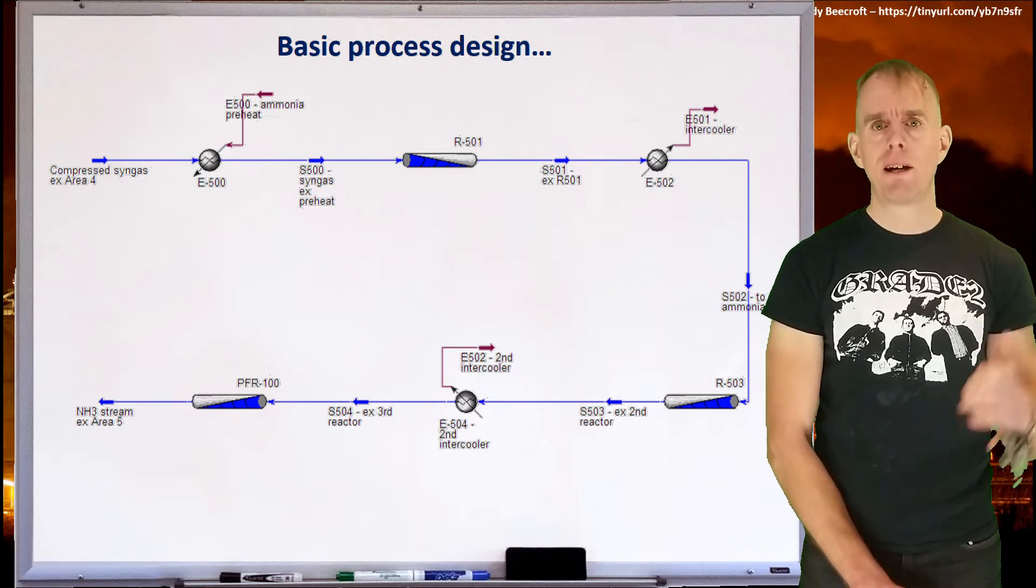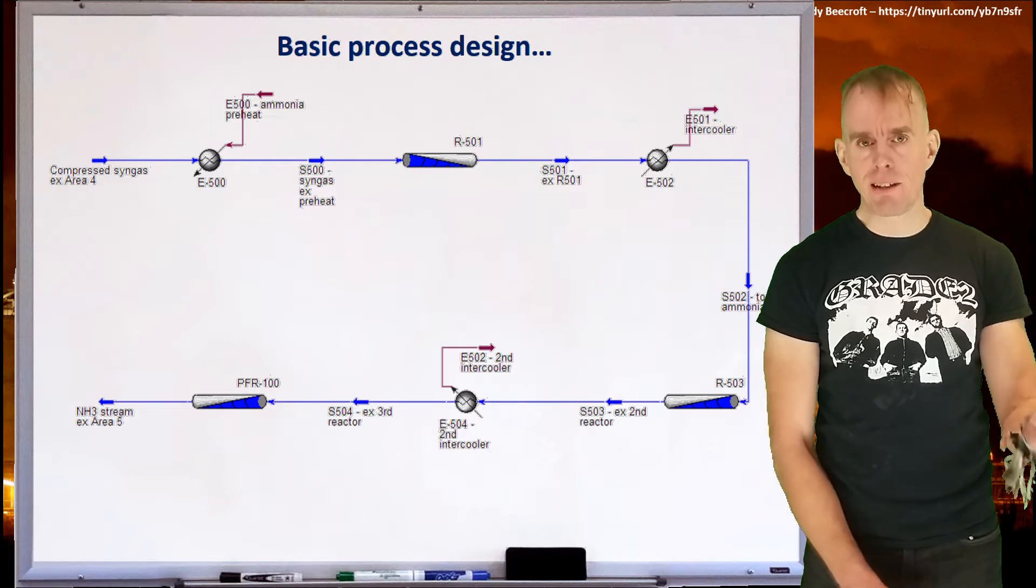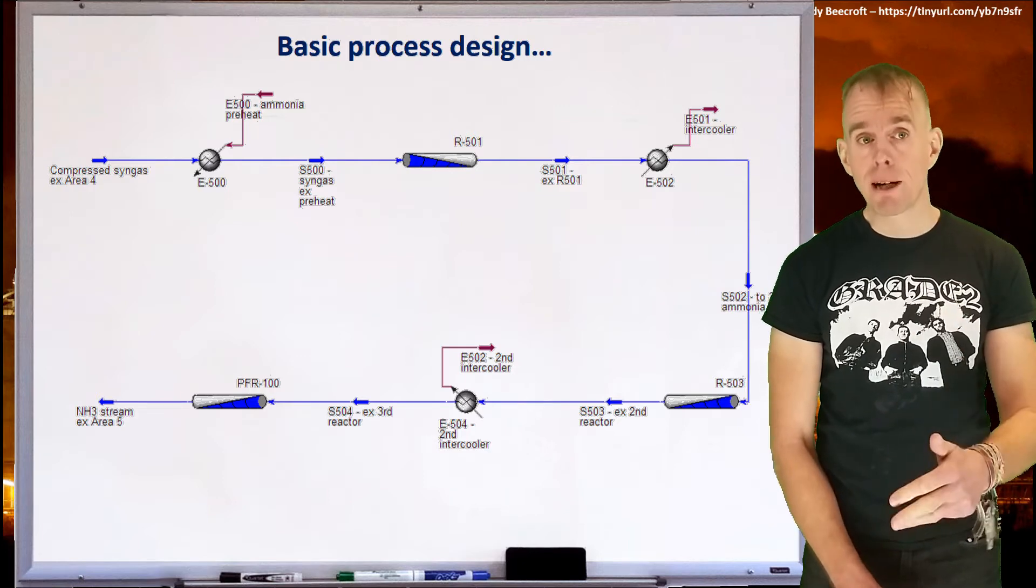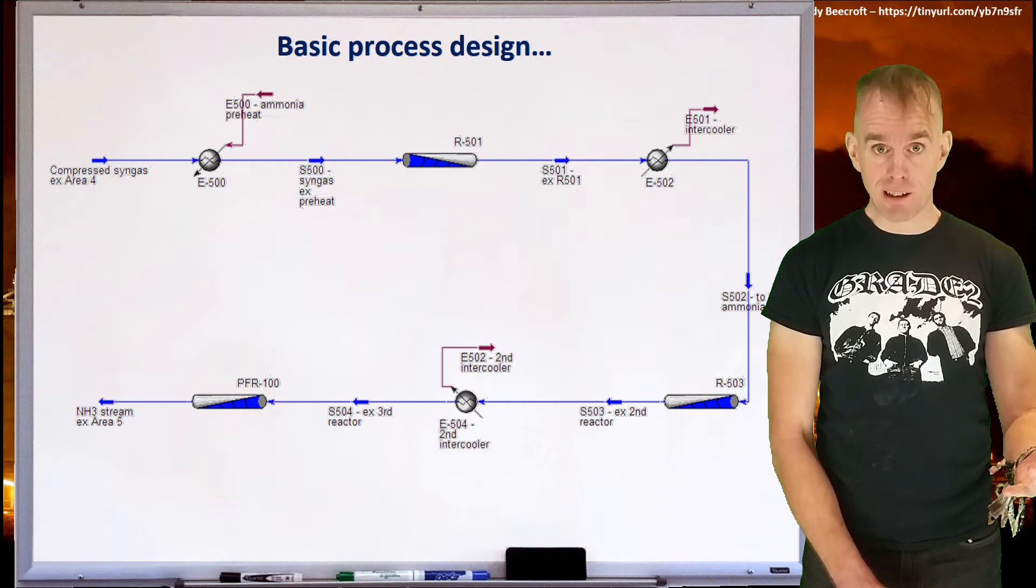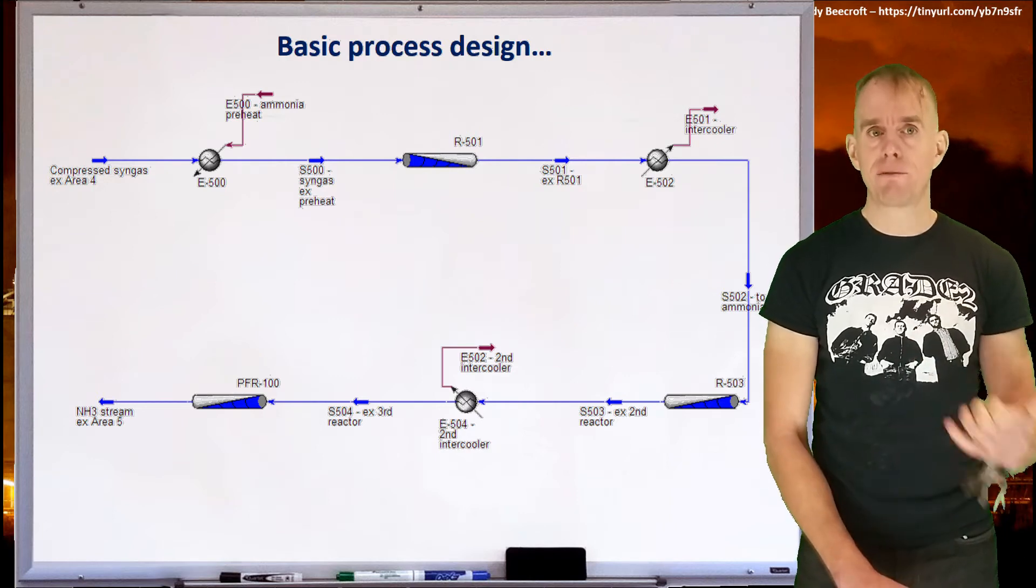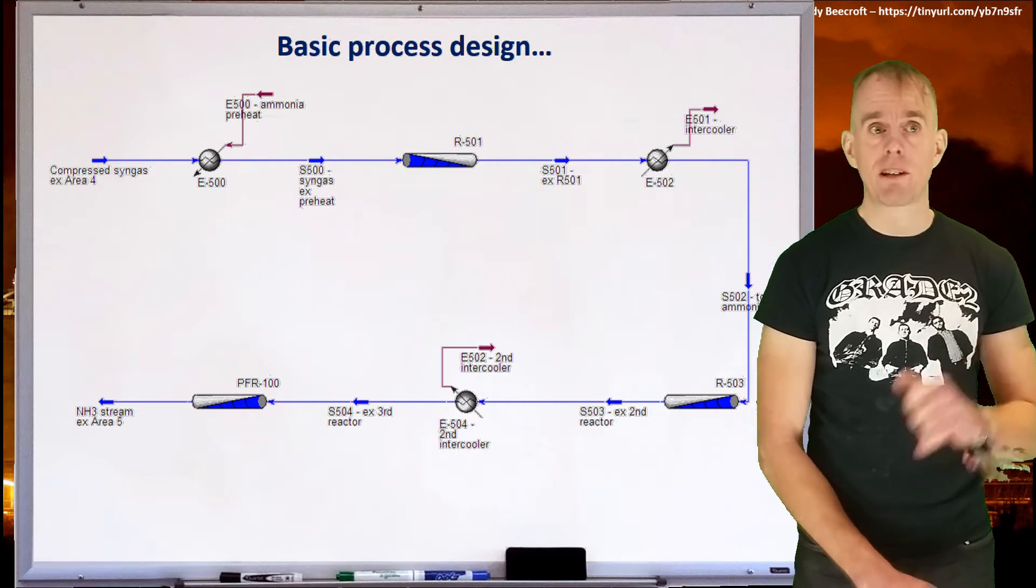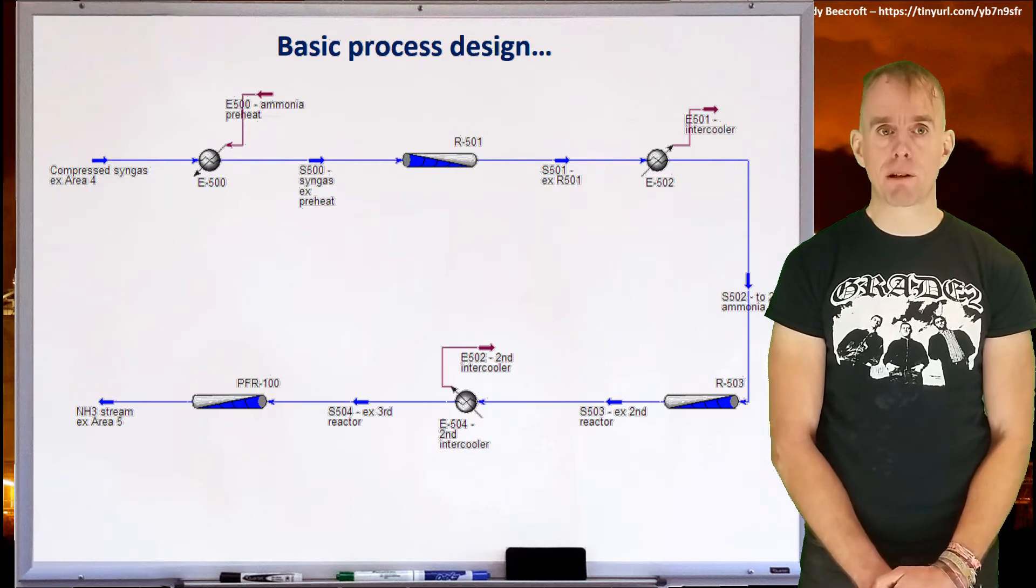So we've got a heat exchanger, a preheater, a packed bed, another heat exchanger, an intercooler, a further packed bed, a further heat exchanger, which is another intercooler, and then a final packed bed. So we've got one, two, three, four, five, six different systems in this very basic process design.